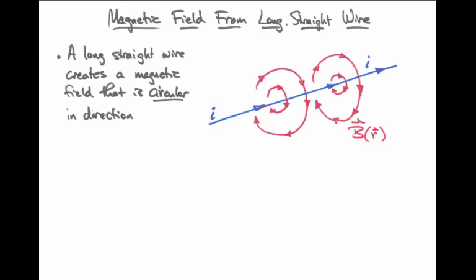In other words, if you were to place a compass somewhere down below this wire, the compass needle would point to the left. If you were to place a compass above this wire, the compass needle would point to the right.